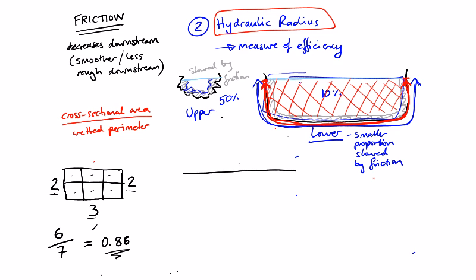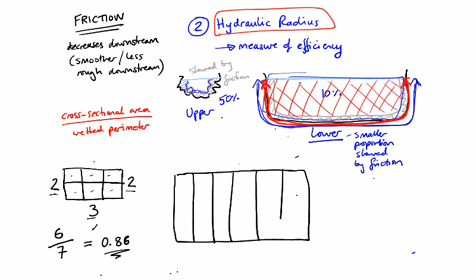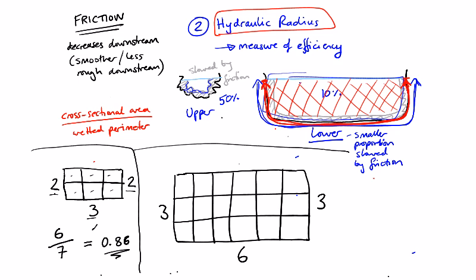Now if we have a look at a bigger channel, this is my bigger channel. So then we have three down here, and then we have six across here, and then three along here. So in this case, we have the cross-sectional area, which is 3 times 6, which is 18, that's the cross-sectional area, divided by the wetted perimeter, which is 3 plus 6, which is 9, plus 3, which is 12. Sorry, 3 times 6 is 18. The cross-sectional area is 18, and then wetted perimeter, 3 plus 6 plus 3, which is 12.